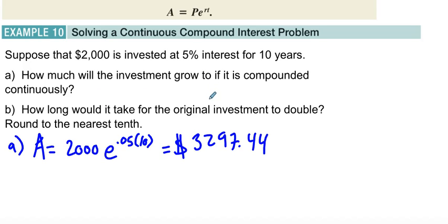How long will it take for the original to double? We're using the same formula, but now we want to know what if A is $4,000. If you start off with $2,000, how much time does it take to double? So $4,000 is now our amount, and our principal is still $2,000, E, still our rate of 5%, but we don't know our time. That's what the question is asking.